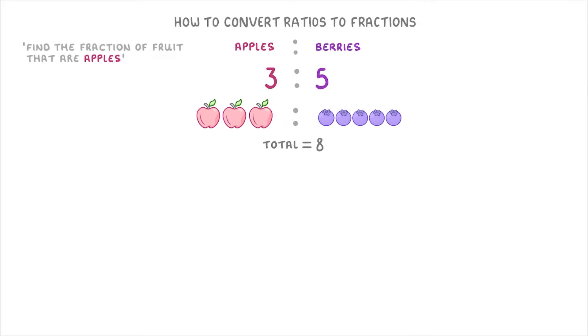So to find the fraction of fruit that are apples, we just do the number of apples, so 3, over the total of 8. So 3 eighths of the fruits are apples.